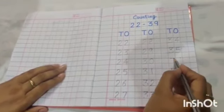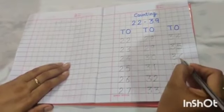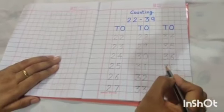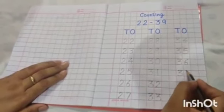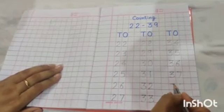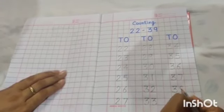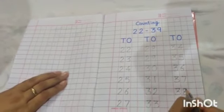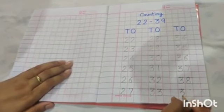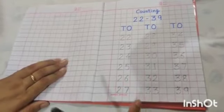36. 37. 38. And the last number is 39. Okay.